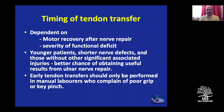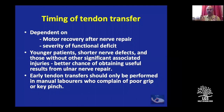The timing of tendon transfer depends on motor recovery. If the injury is close to the target, if it is a younger patient, shorter nerve defect, without significant associated injuries, there is a better chance of useful results. If the injury is more proximal or there has been a crush injury requiring a nerve graft, the procedure differs. The tendon transfer can be done as early as two months after a high ulnar nerve repair, because it is better to restore function early.